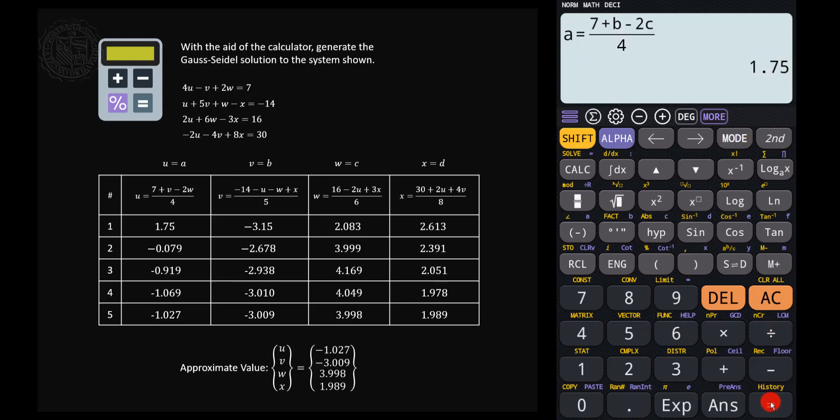So that means that in the first iteration, a is equal to 1.75, and just press equals to get the value of b, so that's equal to negative 3.15, and then press another equal key, and then c is equal to 2.083, press another equal to get the value of d, which is 2.613. Then press equal.